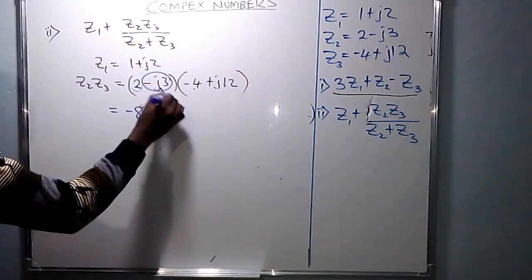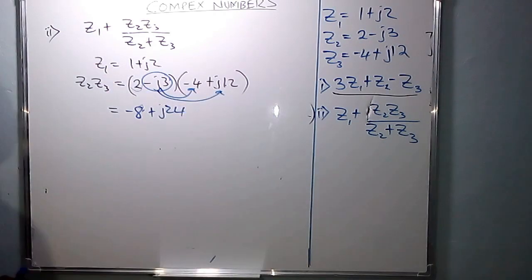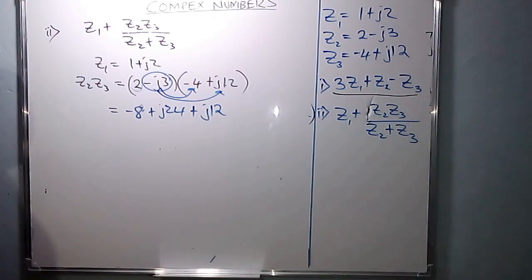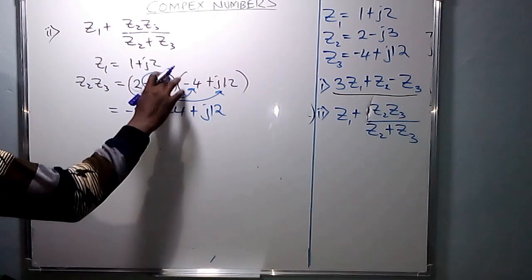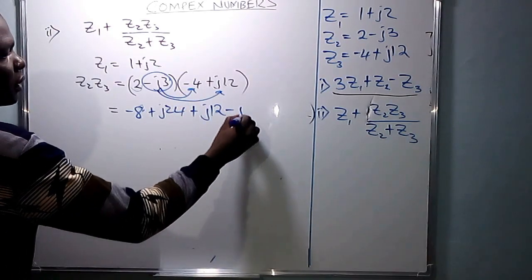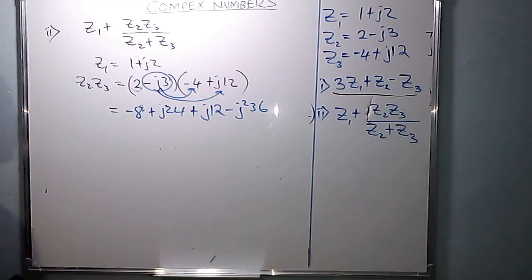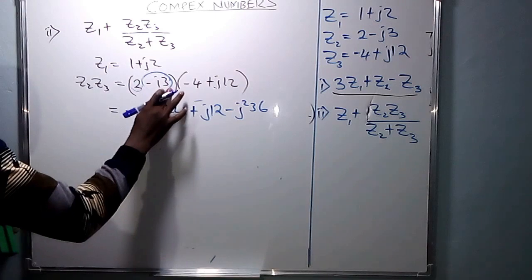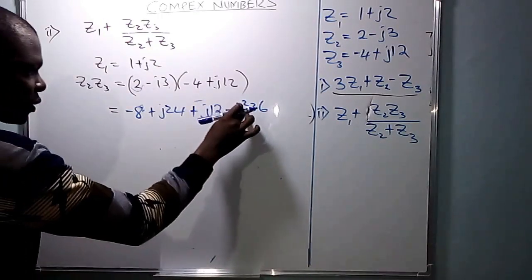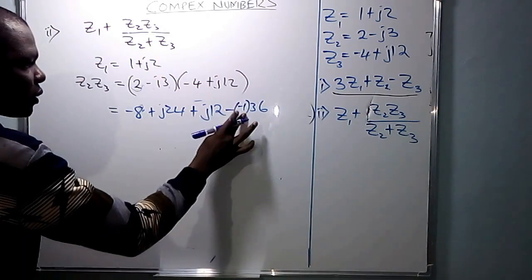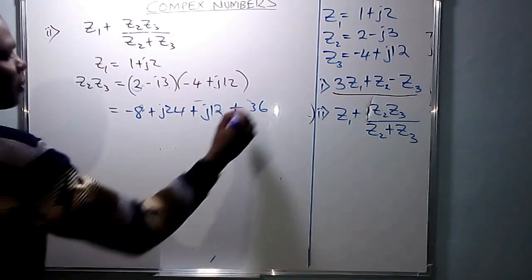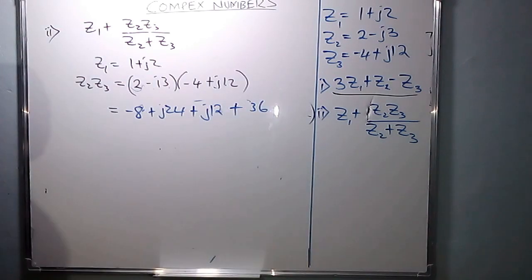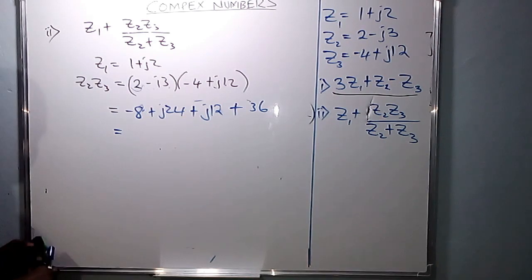The second term in the first bracket is negative j3, which multiplies all terms in the other bracket. Negative j3 times negative 4: that is negative 3 times negative 4 gives positive 12, so we get positive j12. Then negative j3 times positive j12: that is negative 3 times 12 gives negative 36, and j times j is j squared. Since j squared equals negative 1, negative 36 times negative 1 gives positive 36.